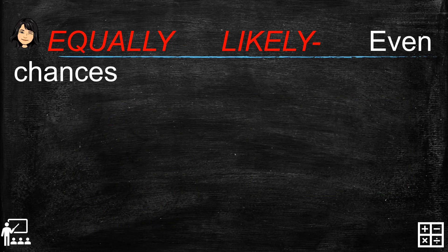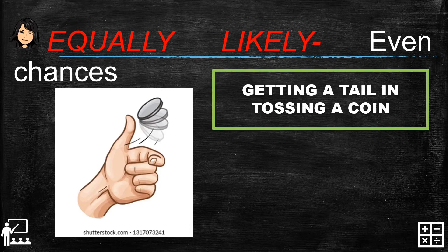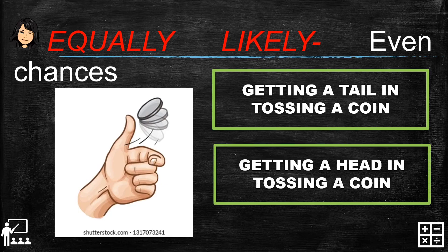Next is equally likely — even chances, or fifty-fifty, fifty percent. Just like tossing a coin. When tossing a coin, we all know there are two faces: tails and heads. Getting a tail when tossing a coin is probably one half of the chances, and one half or fifty percent is equally likely to happen. Getting a head when tossing a coin is also equally likely to happen, because a head is only one out of two sides of the coin.